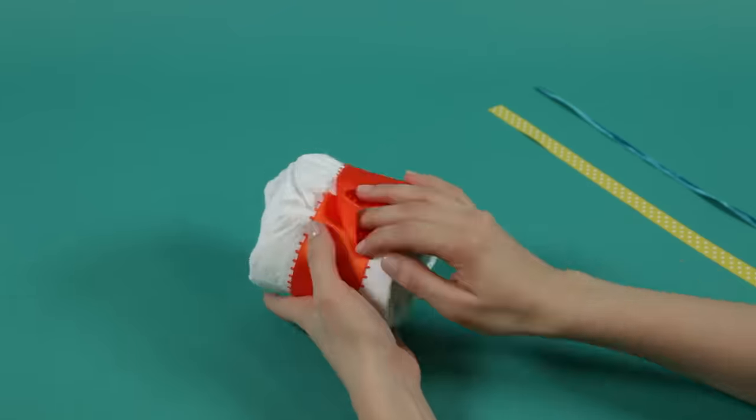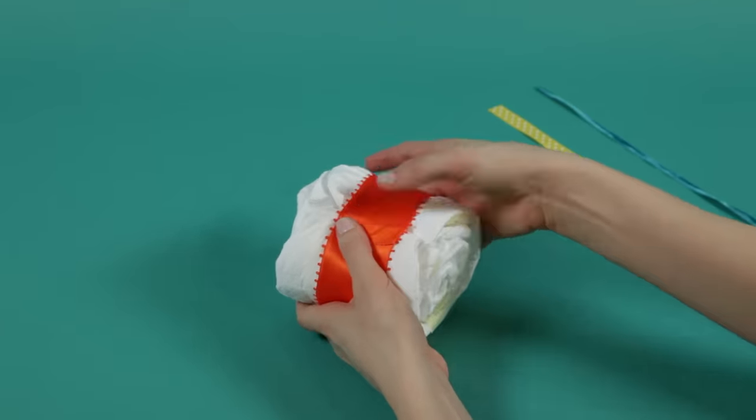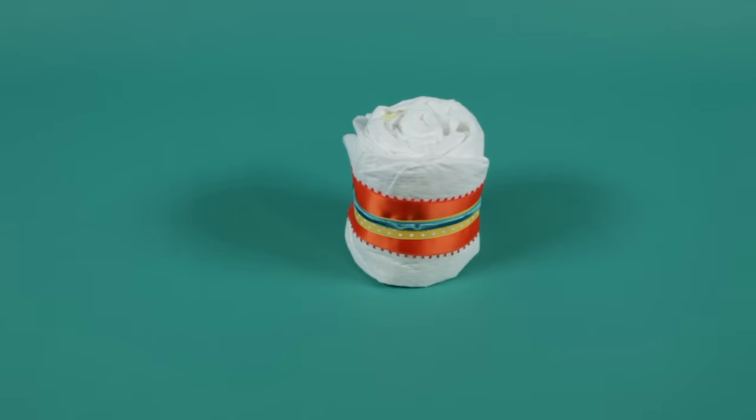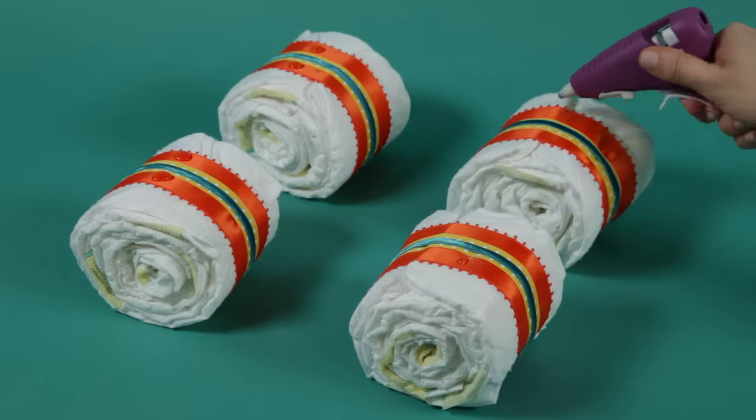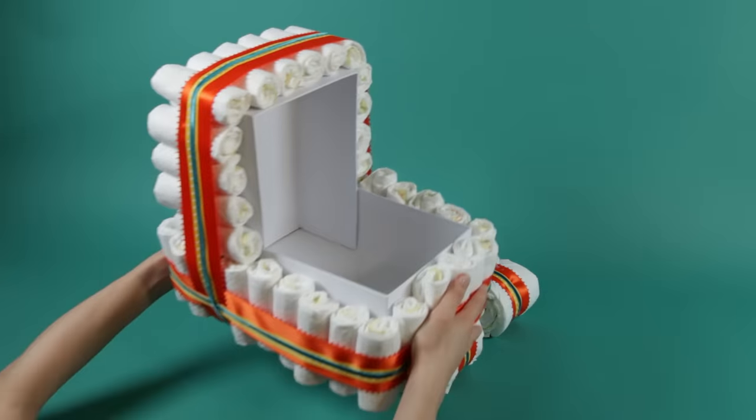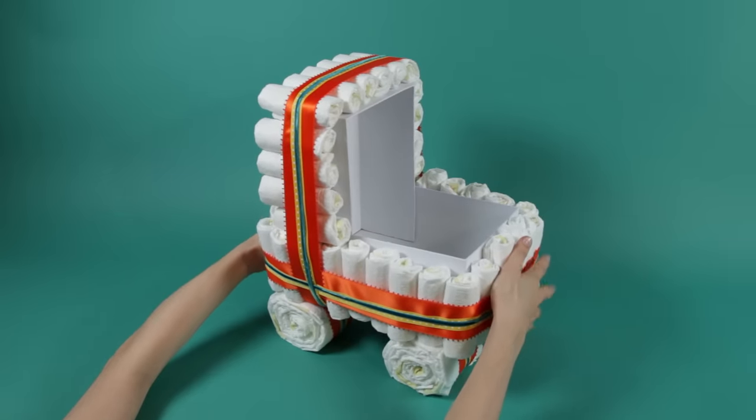Then wrap with ribbon or fabric and secure the ends with hot glue. Add hot glue to the ribbon or fabric and glue the wheels onto the bottom of the stroller. Make sure to glue them so the rolled edges face the sides.